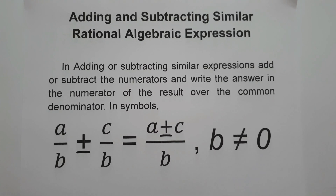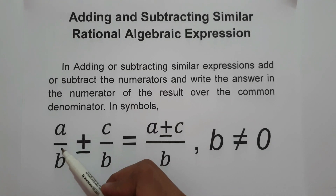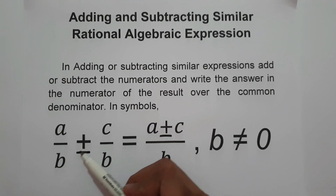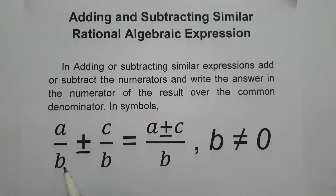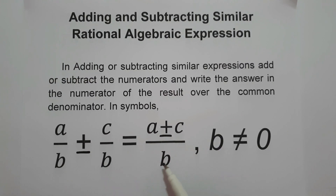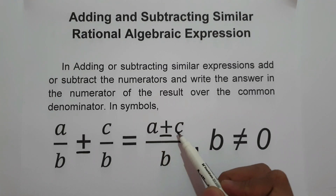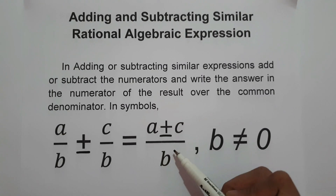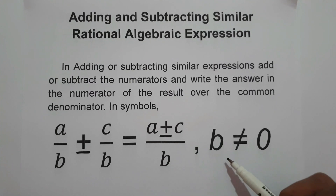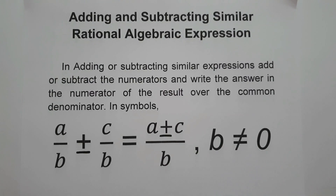In symbol, we have a over b plus or minus c over b. Since we have the same denominator, we just simply copy the denominator and then add or subtract their numerators — that is a plus or minus c over b, where b is not equal to 0.